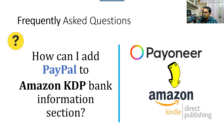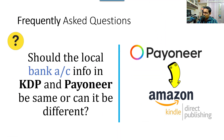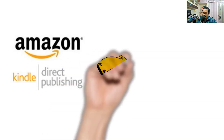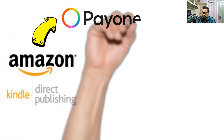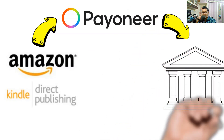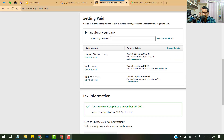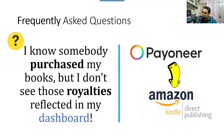Next question: does the bank account in Amazon KDP and the Payoneer account have to be the same, or can they be different? It doesn't matter — they can be the same or different accounts. When you earn royalties in Amazon KDP, Amazon directly deposits into the bank account within KDP. When you use Payoneer as your virtual bank account, Payoneer deposits into the bank account you associated within Payoneer. These are two separate processes, so same or different is fine.